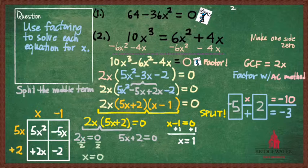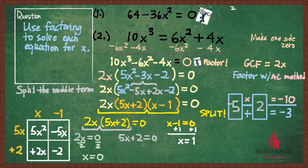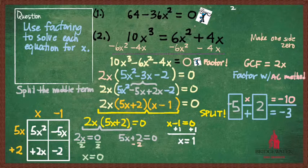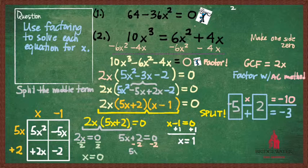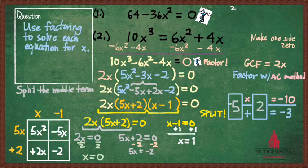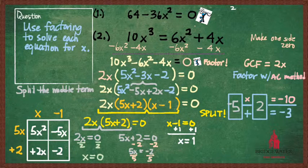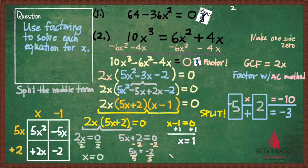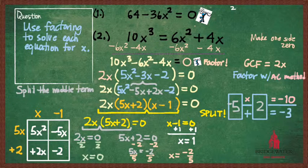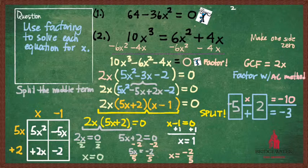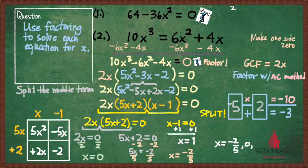And so the one that takes the most effort to solve is the one in the middle. 5x plus 2 equals 0. What do I do first? Let's subtract the 2. Reverse the order of operations to get the x by itself. So 5x is equal to negative 2. And finally, what do I want to do here? Divide by 5. So what's my last solution? Negative 2 fifths. Yep. So here is an example of an equation which actually has three different solutions. x equals negative 2 fifths, x equals 0, and x equals 1.